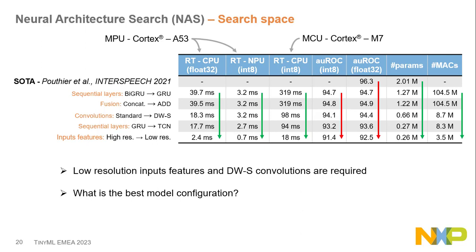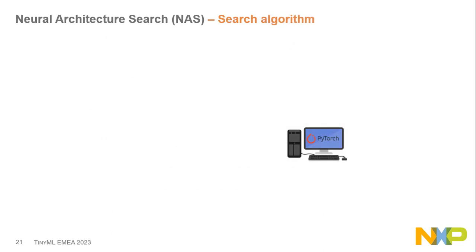The two key changes we keep for all experimentation are depth-wise separable convolution and lower-resolution input features. But we still don't know the best configuration — whether to use GRU or TCN, how many layers, what kernel sizes, what hidden state dimensions. We will determine these using NAS.